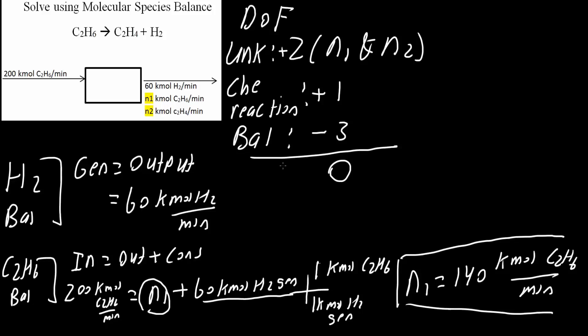N2 is very similar to this, so it's going to be pretty straightforward. N2 would be a C2H4 balance. With C2H4, it's going to be generation equals output.